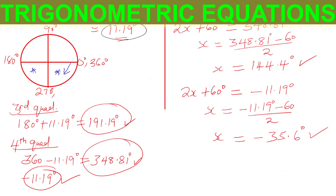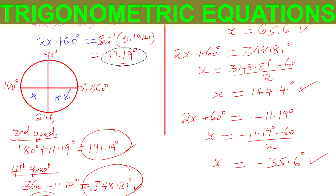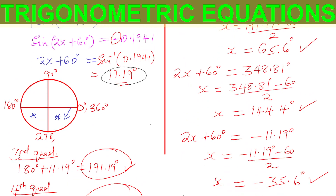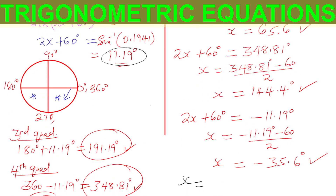So those are the angles, and when you look at them they are all within the given range. Therefore, the values of x are 65.6°, or 144.4°, or negative 35.6 degrees. That is how you obtain the values of x.